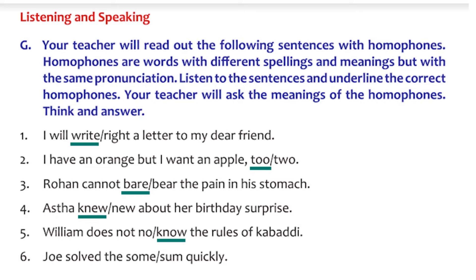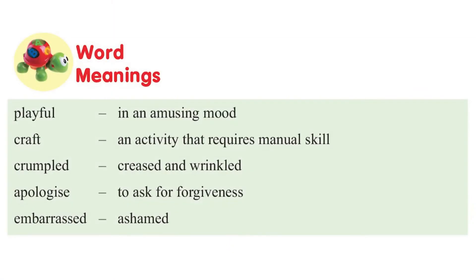'Joe solved the sum quickly' - they are talking about S-U-M, not S-O-M-E. Next we have a story called 'The List' in our book, about a boy named Jeeva who is very playful. Let's look at some word meanings. Playful means in an amusing mood. Craft is an activity that requires manual skill. Crumbled means creased and wrinkled. Apologize means to ask for forgiveness - it's always good to apologize after doing a mistake. Embarrassed means ashamed.